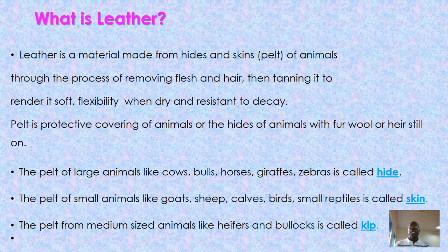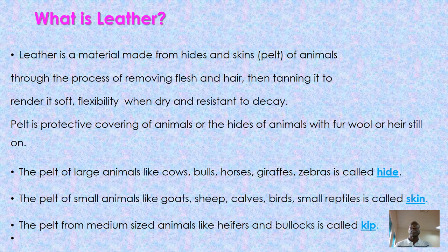Pelts are classified in different ways depending on size. For example, hides and skins from large animals like cows, bulls, horses, and giraffes are referred to as hide. Those from small animals like goats, sheep, calf, birds, and small reptiles are referred to as skin. Medium animals like heifer or bull are called kips.